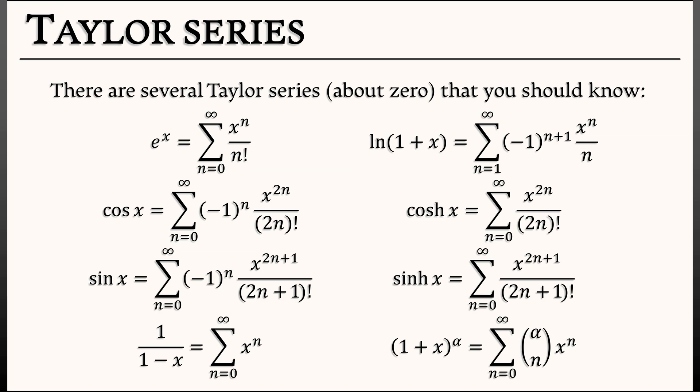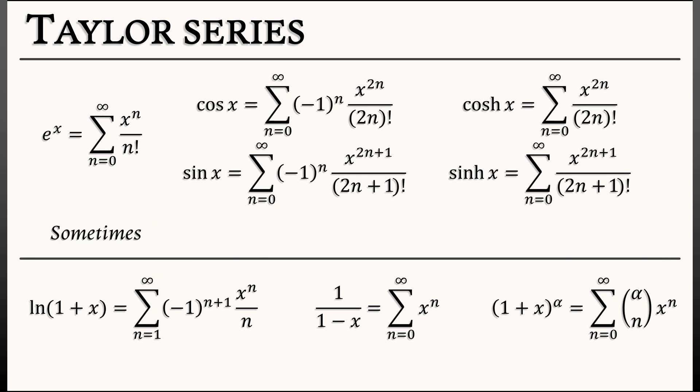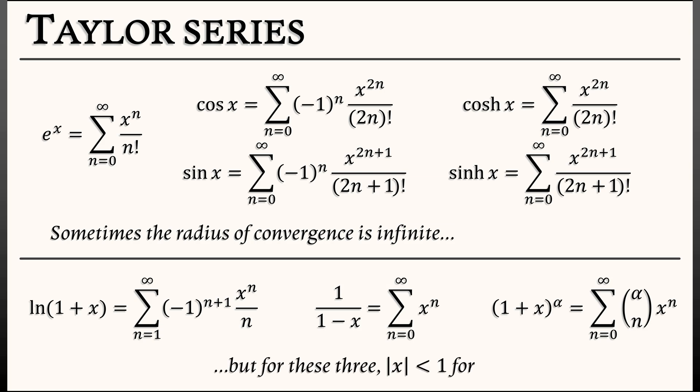Taylor series don't always converge to the function you're trying to approximate. Some of the time the radius of convergence is infinite and everything's fine — the exponential function, sine, cosine, hyperbolic sine, and hyperbolic cosine are all good there. But for three of the ones we've just seen — the natural log, the geometric series, and the binomial series — you have to worry about convergence. In all three of these cases, you need to keep x less than 1 in absolute value in order to get absolute convergence.